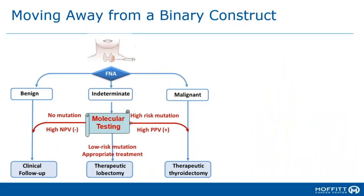We're moving away from that binary construct where the purpose of molecular testing is to identify those patients who are benign and can safely be watched. When a test is positive, we're stratifying that risk into the high-risk mutations that require a therapeutic total thyroidectomy, plus or minus neck dissection — decisions we can increasingly make based on the genetic drivers of the disease.